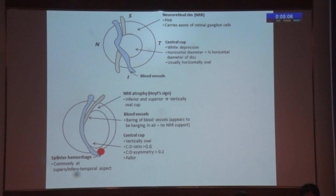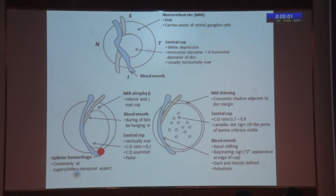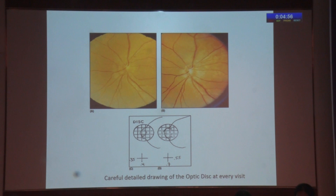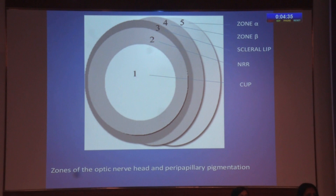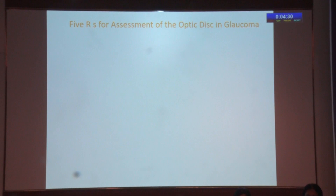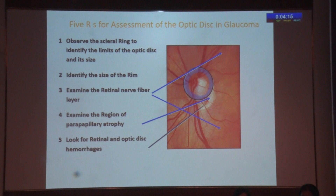When a disc is suspicious or has pathognomonic changes, or is advanced, these are represented in schematic diagrams. I would always say to keep a drawing of the disc as you see it, because there is inter-observer variation. The alpha and beta parapapillary zones are important — we are interested in the beta zone. The scleral tunnel rim is what we see as the cup. The five steps include using the scleral ring to identify the limits of the optic disc and the size of the rim, examining the retinal nerve fiber layer carefully, and looking for parapapillary atrophy and disc hemorrhages.